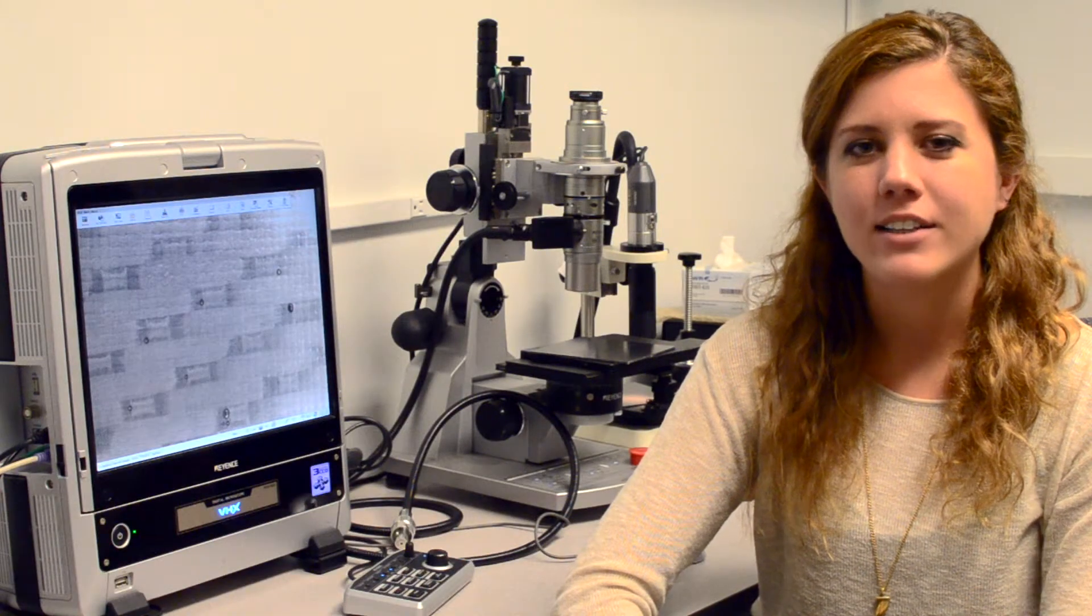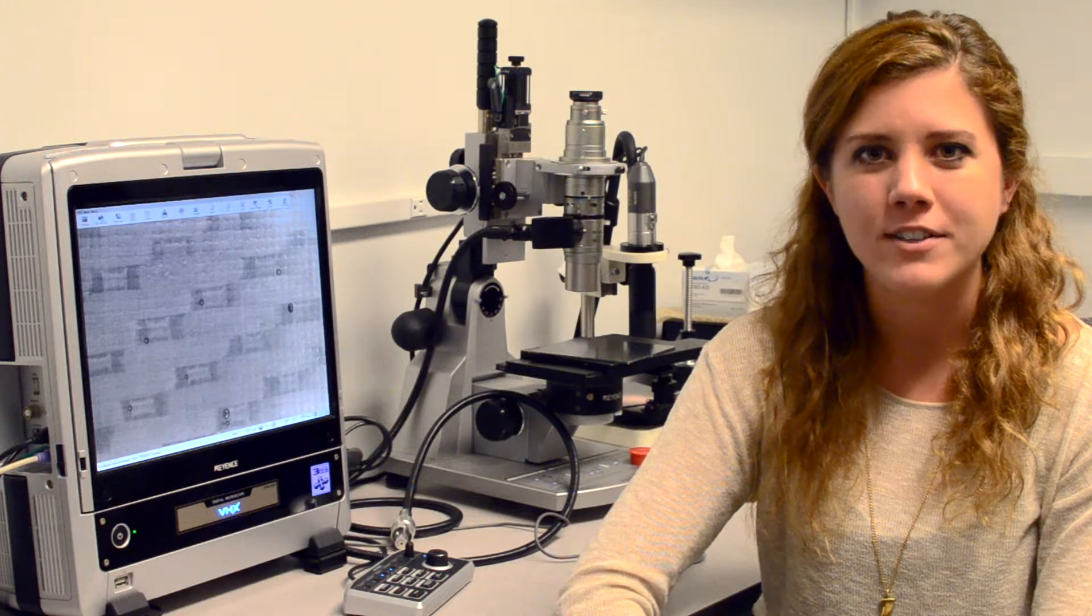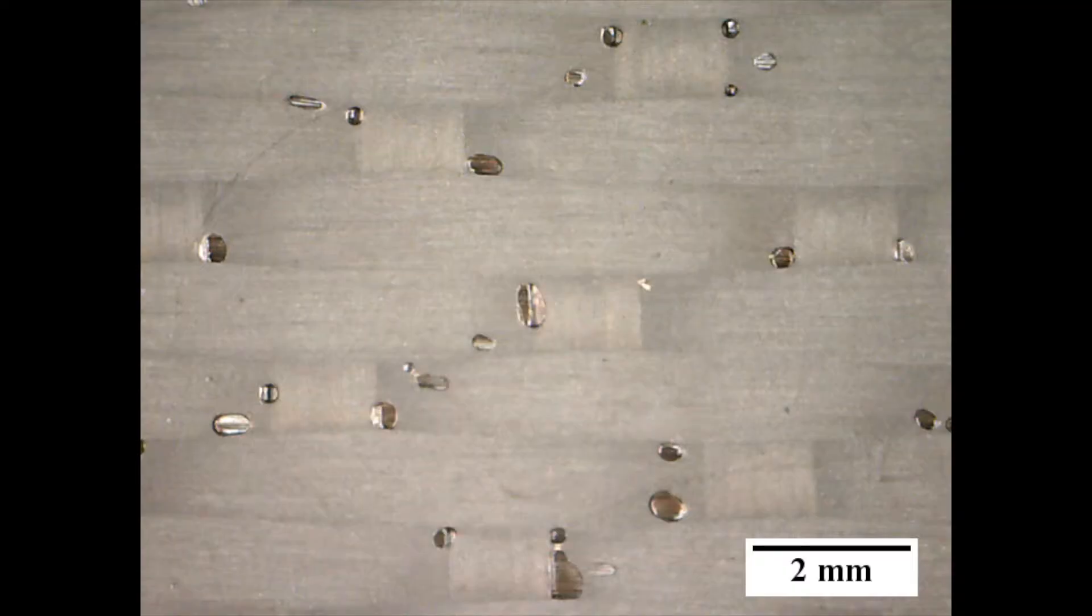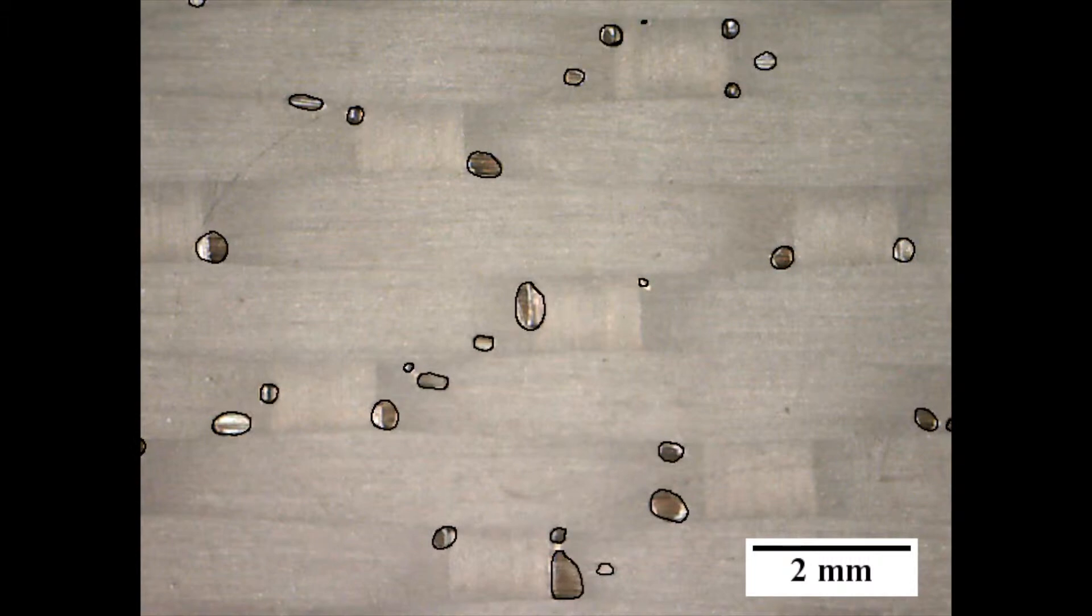Surface porosity can be quantified using a low magnification optical microscope like this one here and an image analysis program. We found that the best way to quantify surface porosity was to take a raw image of the composite surface, manually circle each surface flaw, then convert the color image into a binary one where surface porosity is indicated by black pixels.